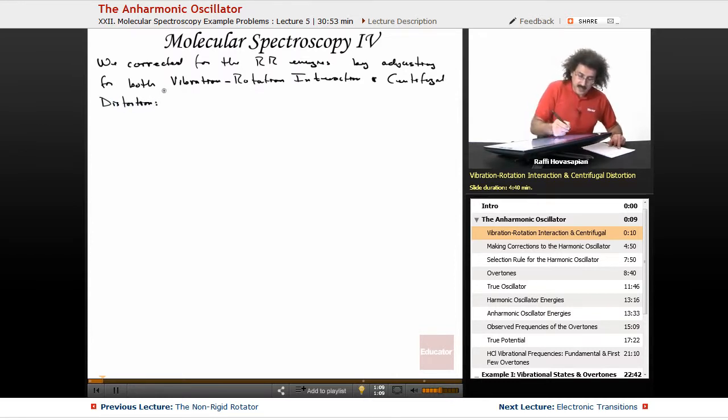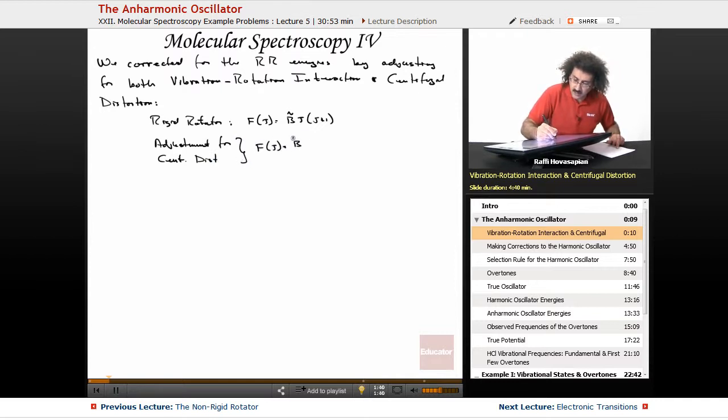Okay, now the rigid rotator, the energy was j times j plus 1. The adjustment for centrifugal distortion gave us f of j equals B times j times j plus 1 minus D times j squared times j plus 1 squared.